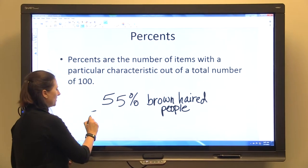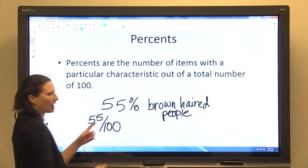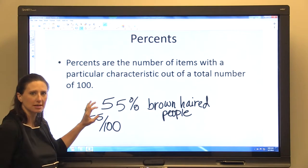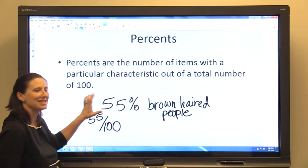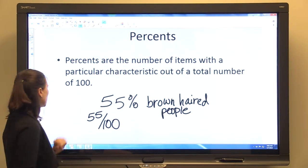That just means that 55 out of 100 people in the room have brown hair. Remember from working with percentages, it's easy to go from a percent to a fraction because it's the number out of 100.